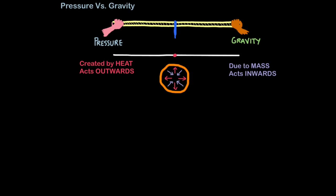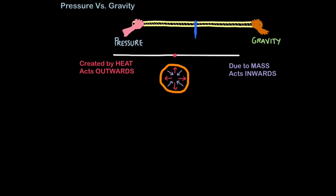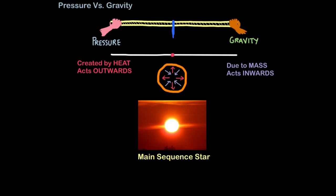In many respects it is a bit like a tug of war between gravity and pressure. In the most stable stage of a star's life cycle, in other words the main sequence star stage, pressure and gravity are balanced. This is why it is such a stable stage.